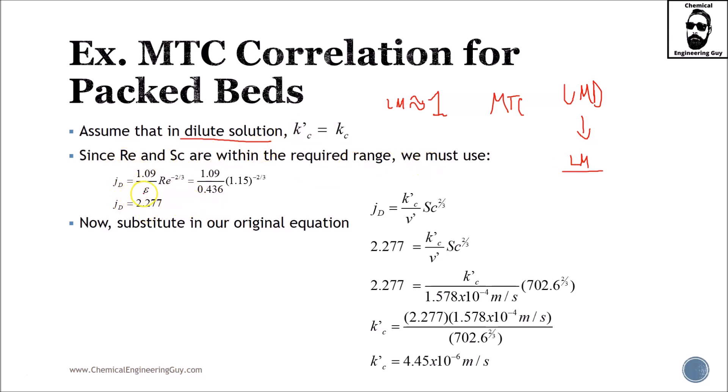Reynolds and Schmidt are within the ranges. Essentially, what I need to do is simply substitute what I know. So I have the void space, which is 43.6%. I have Reynolds number 1.15 to the minus 2/3. And I get JD equals 2.277. But this is not the final answer, guys. Remember that we're working with correlations and dimensionless numbers. This is just a dimensionless number. What I need is actually our k value, technically speaking, kc value.